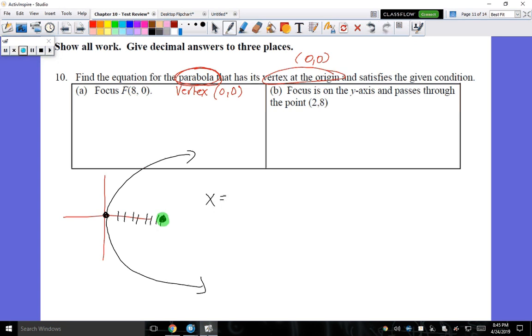Because it's horizontal, we know that it's going to be X is equal to A times (Y minus K) squared plus H. And now we just have to figure out what goes where. So in vertex form, this X value will go here for H, and this Y value will go here for K.